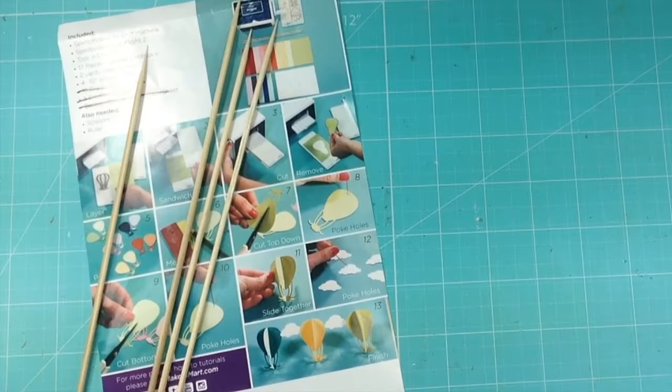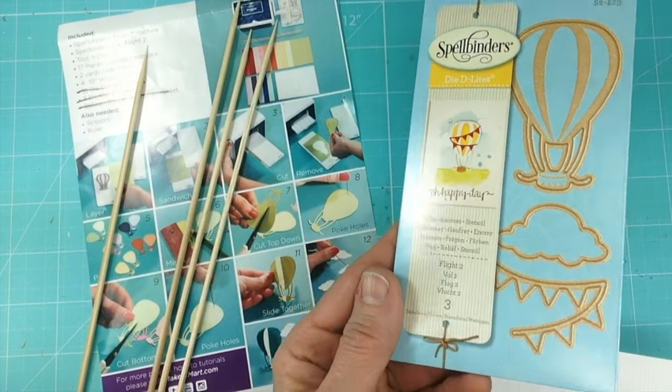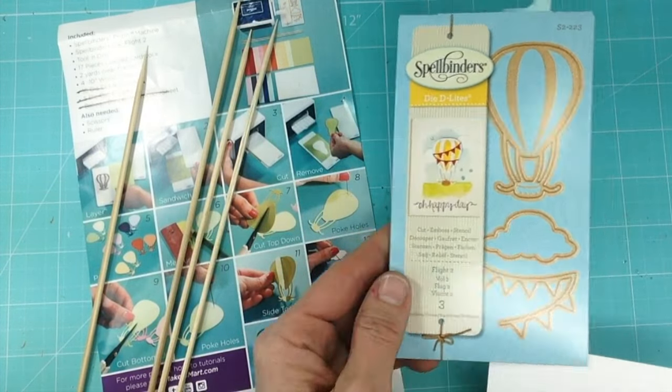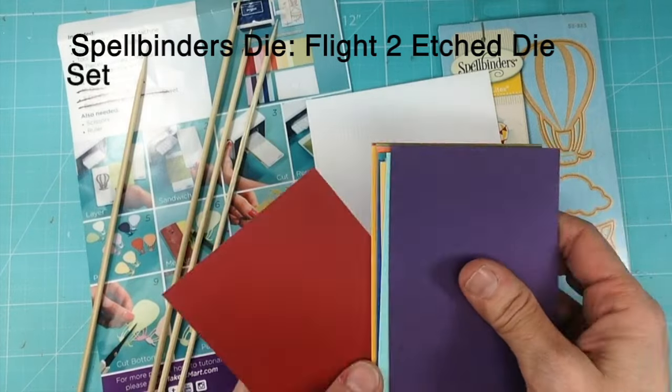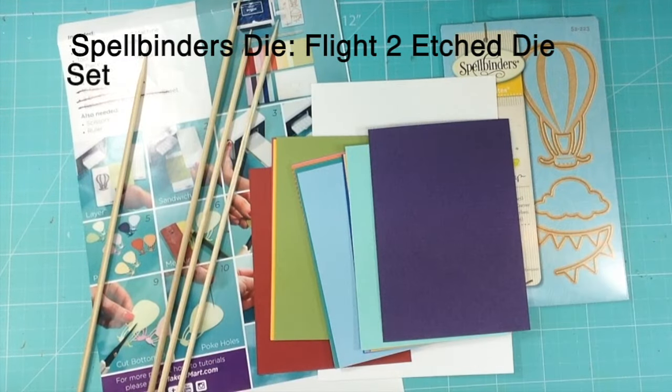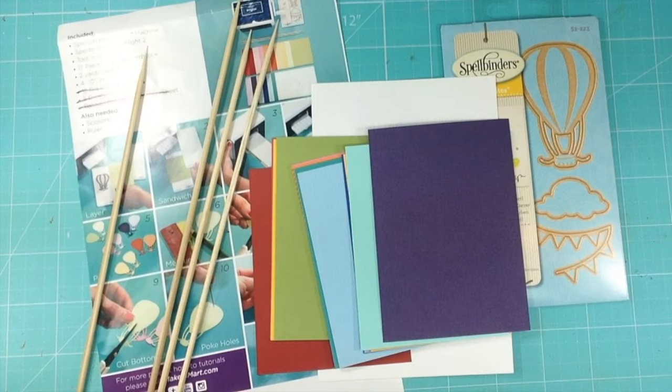The kit also comes with an instruction sheet to make the adorable banner, the etched die set called Flight 2, some card stock, some wood skewers, and filament.